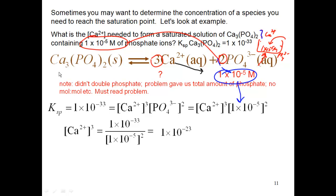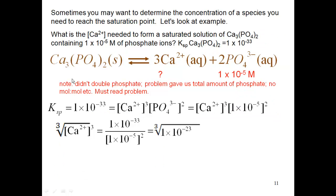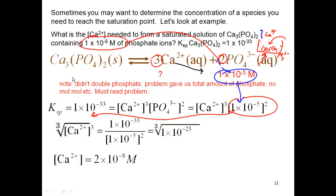Mathematically, we get calcium cubed by itself: I'll take that 1×10⁻⁵ squared and divide both sides by it, giving me calcium cubed equals 1×10⁻³³ divided by (1×10⁻⁵)², which gives me 1×10⁻²³. Now I want to get rid of the cube, so I take the cube root of both sides, which gives me the concentration of calcium to be 2×10⁻⁸ molarity.